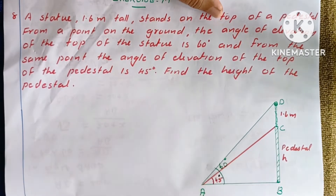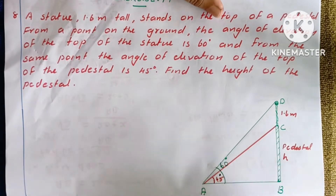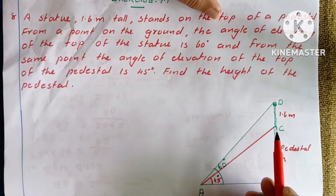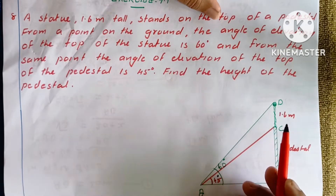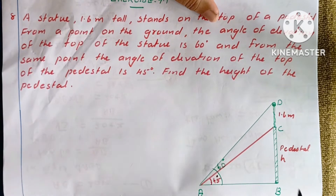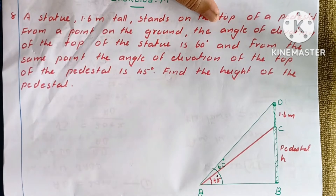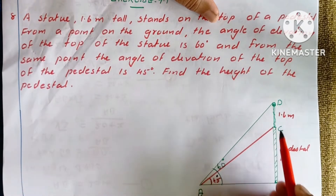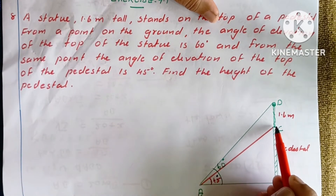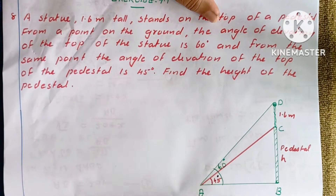BC is the pedestal, and CD is the statue. The CD length is 1.6 meters. The BD side is the total height, and AB is the adjacent side. The angle of elevation values are 60 degrees and 45 degrees for the respective triangles.